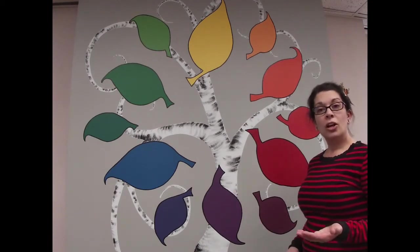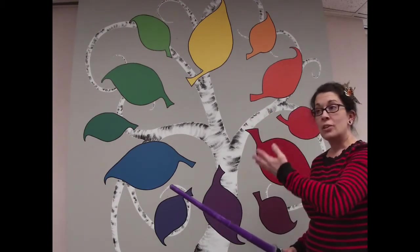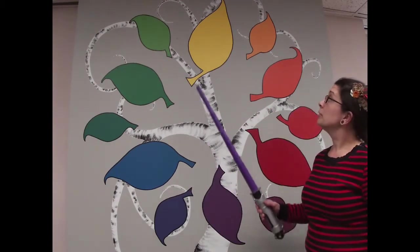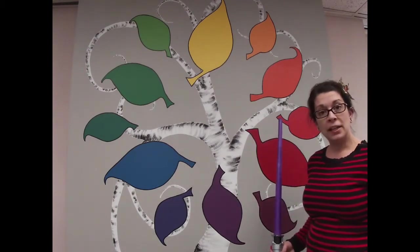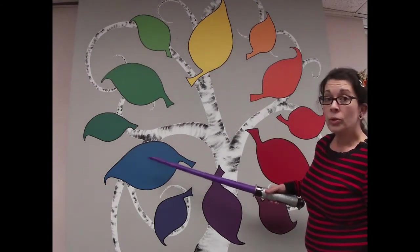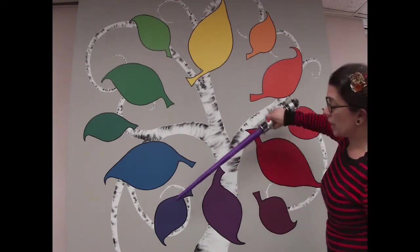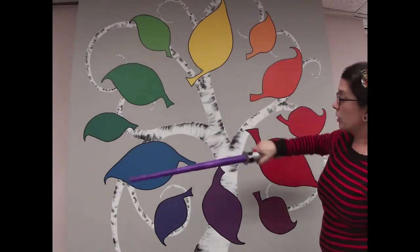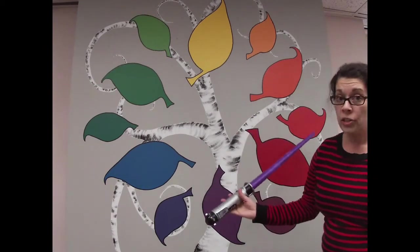So you might see color wheels in other places with either red or blue at the top. It doesn't matter because no matter what, the primary colors are used to mix all the other colors. So yellow and blue creates all of the green colors here between them. Blue and red create all of the purple and violet colors here. Yellow and red create all of the orange colors.